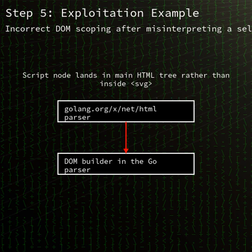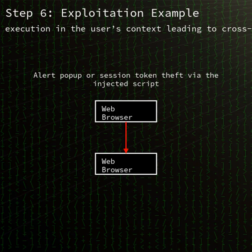If you're using the tokenizer API directly, you may emit a self-closed token incorrectly. If you rely on the higher-level parse functions, subsequent elements or text nodes can be placed in the wrong scope, potentially leading to layout errors, DOM injection flaws, or logic bypasses in applications that sanitize or transform HTML based on structural assumptions.